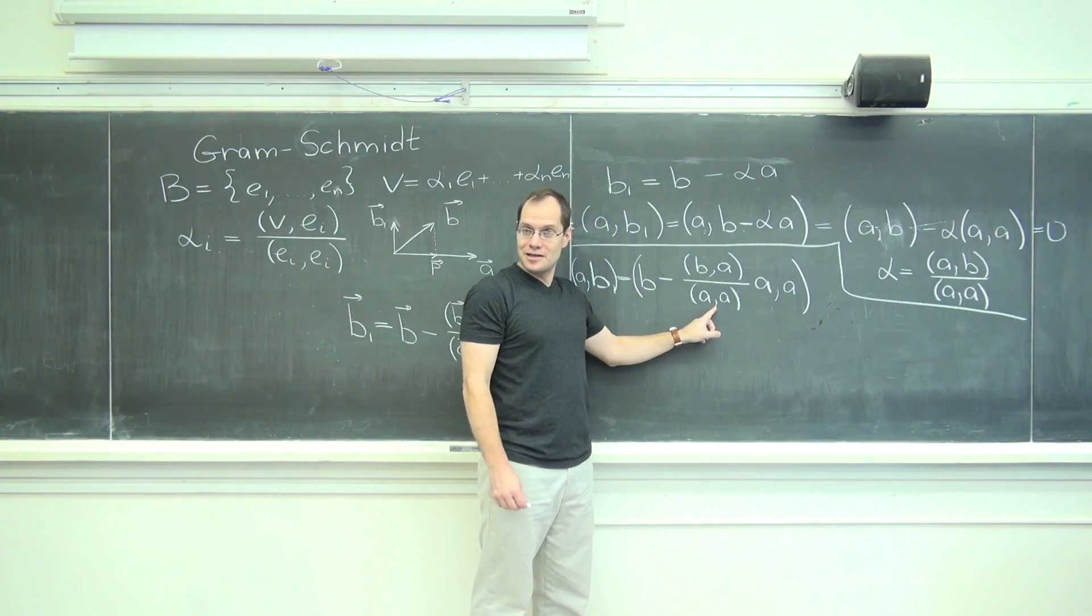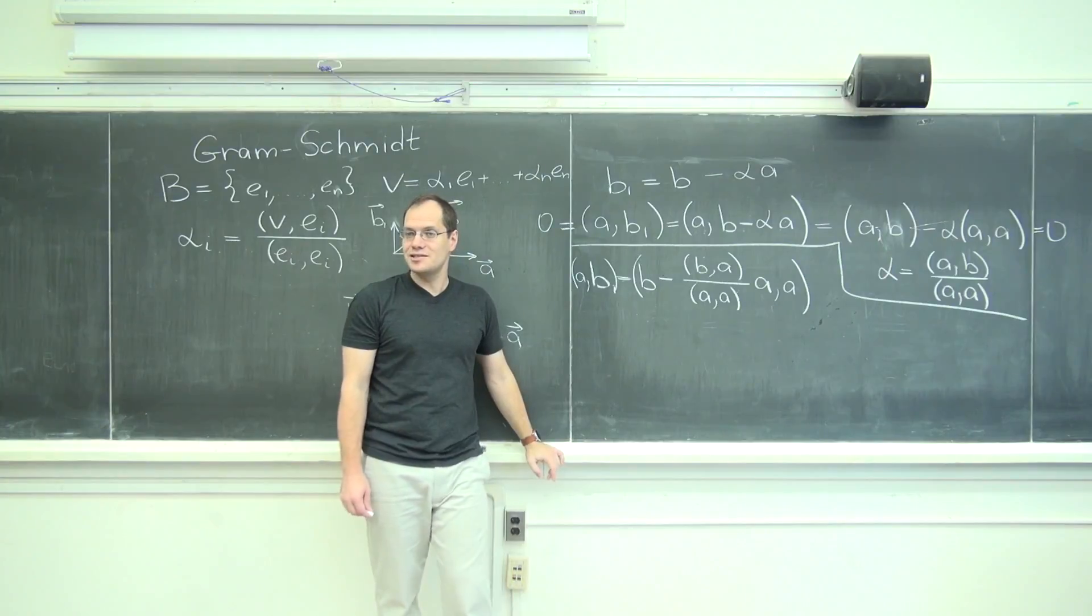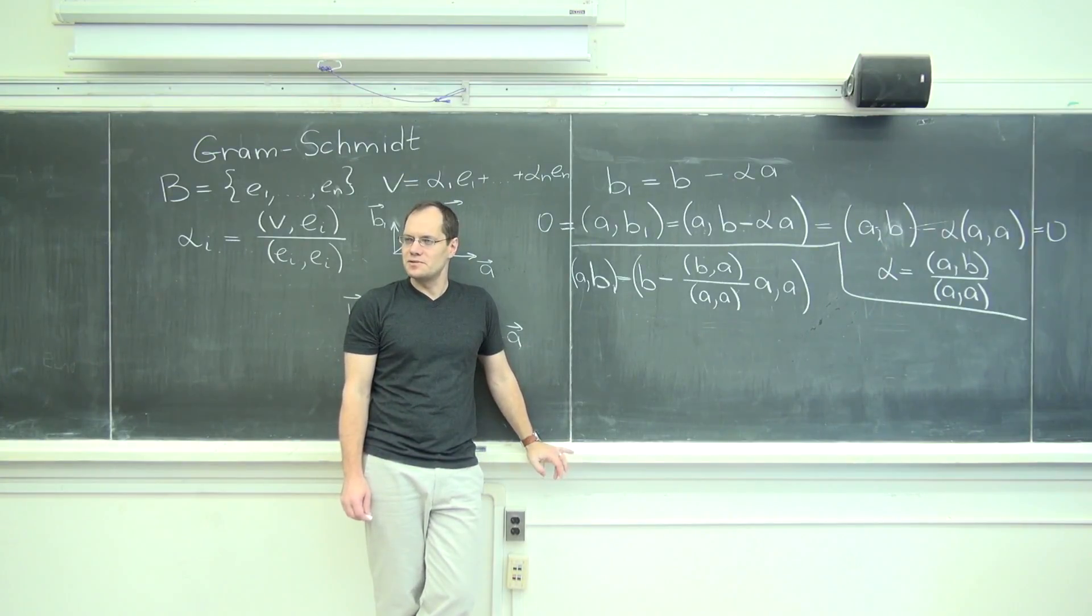Which will of course cancel the denominator, and we'll have a dot b minus a dot b. Zero. Confirmed.